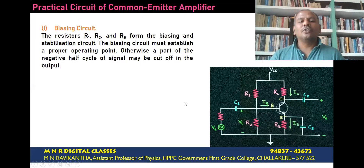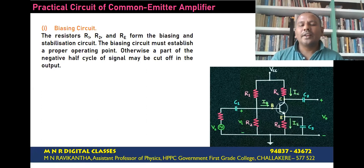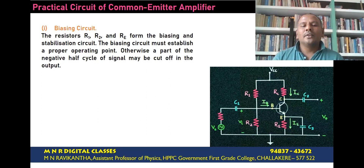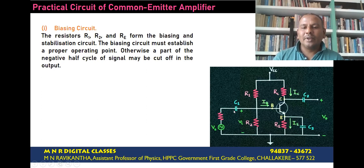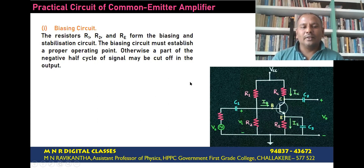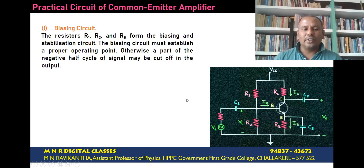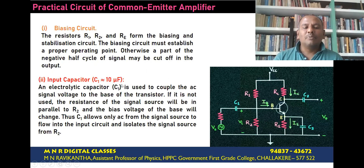The biasing circuit must establish a proper operating point. Otherwise, a part of the negative half cycle of the signal may be cut off in the output. In order to achieve amplification, the transistor circuit must always be in the active region. To achieve that, the operating point should always be at the midpoint of the load line. Therefore, we have to choose proper values of R1 and R2 such that the transistor circuit is always in the active region.